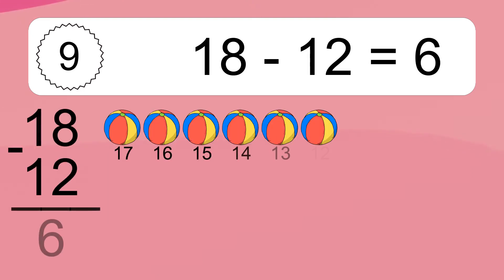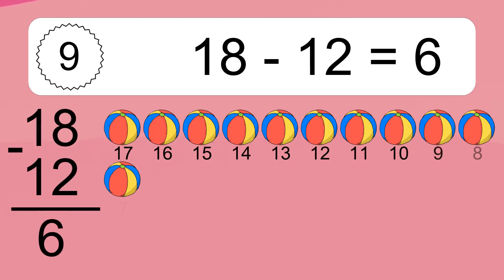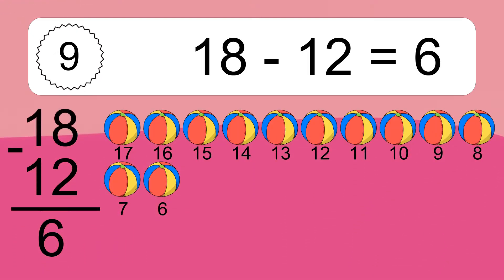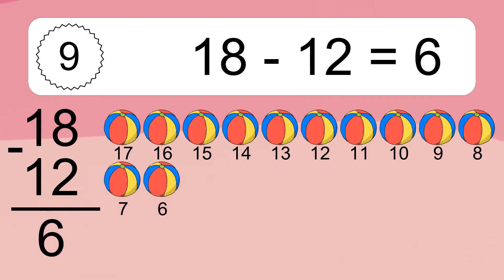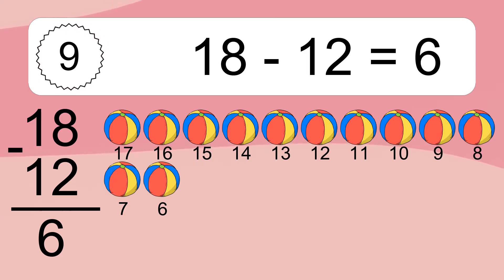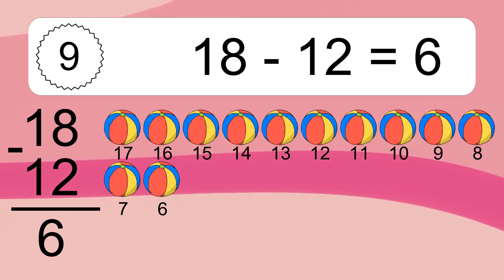18 minus 12 equals what? 18 minus 12 equals 6. Let's count it. 17, 16, 15, 14, 13, 12, 11, 10, 9, 8, 7, 6.